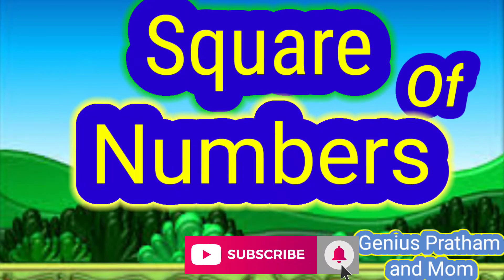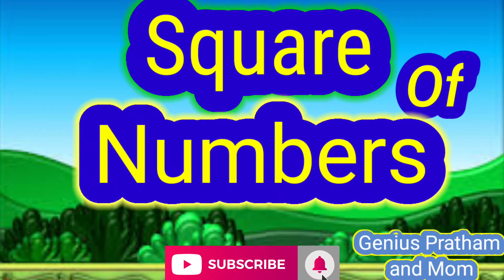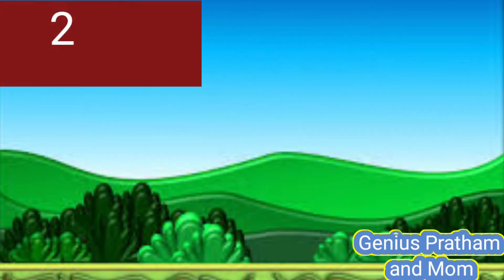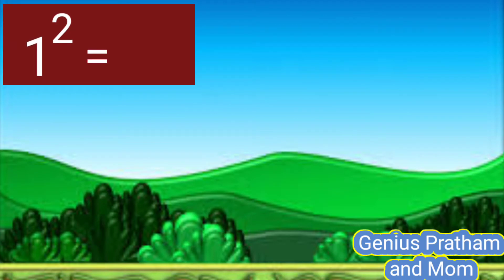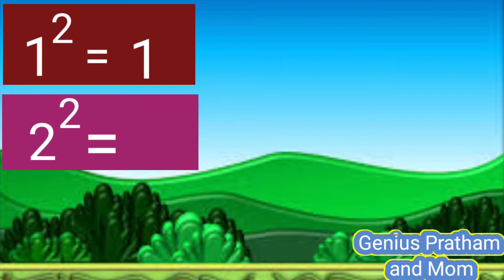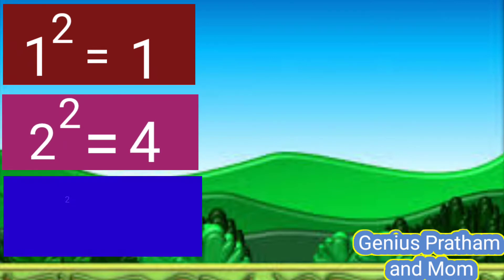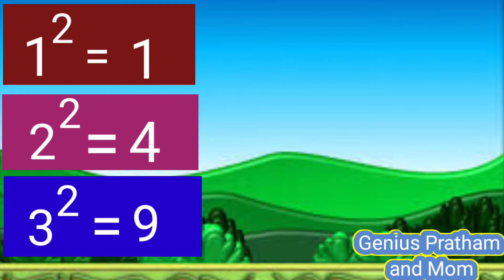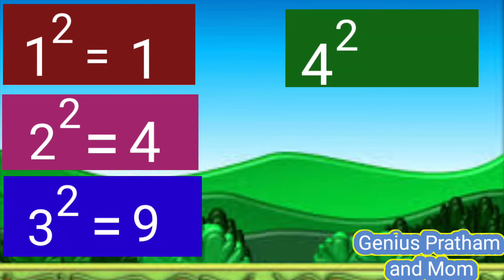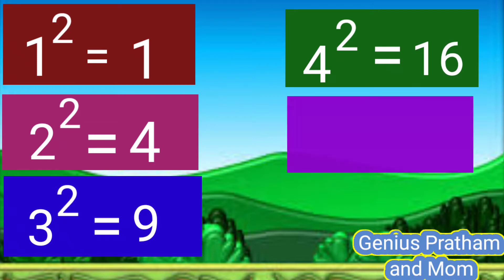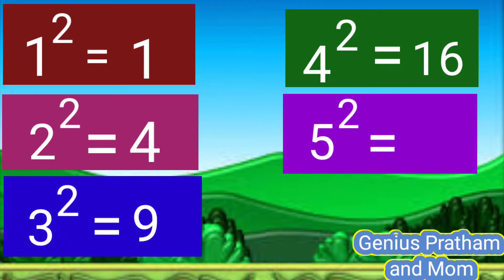Let's learn square of numbers. Square of 1 is 1. Square of 2 is 4. Square of 3 is 9. Square of 4 is 16. Square of 5 is 25.